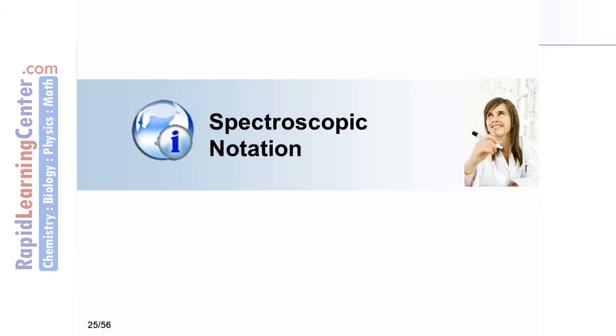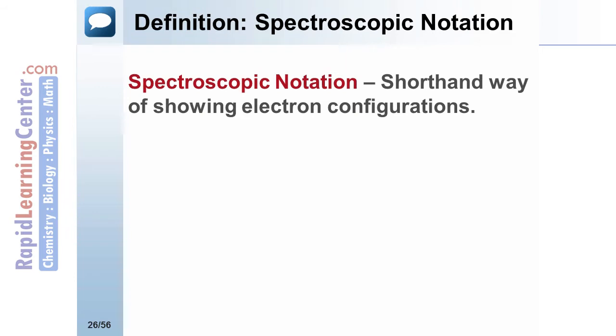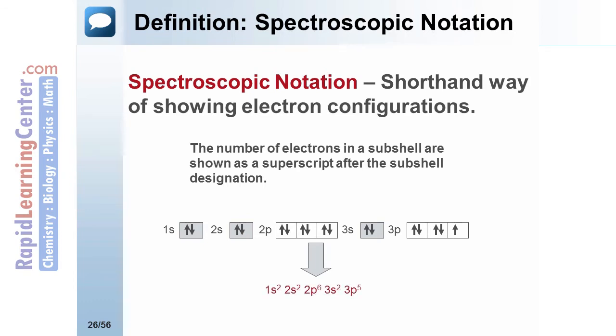What is spectroscopic notation? Spectroscopic notation is a shorthand method of showing electron configurations. Rather than showing boxes for orbitals and arrows for electrons, the number of electrons is written as superscript after the orbital designation. For example, for this box and arrow configuration, this is a spectroscopic configuration.